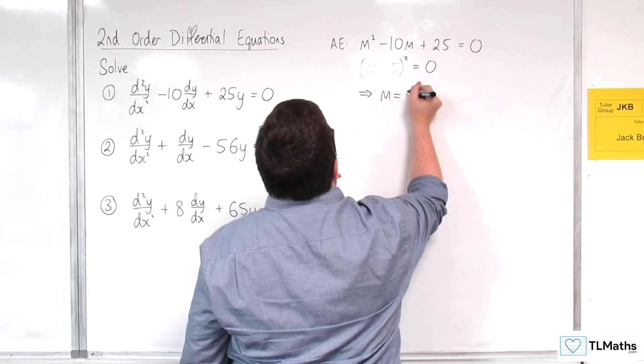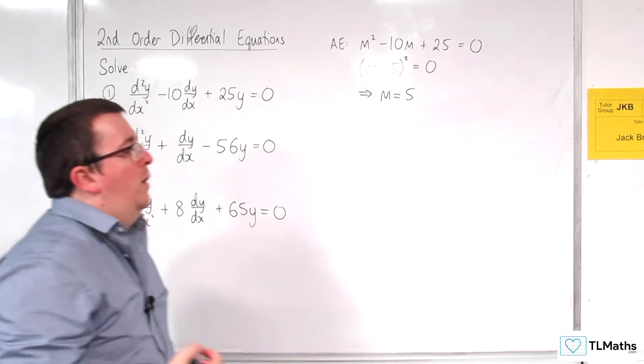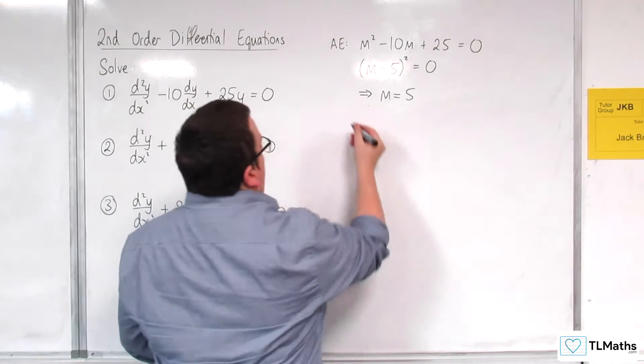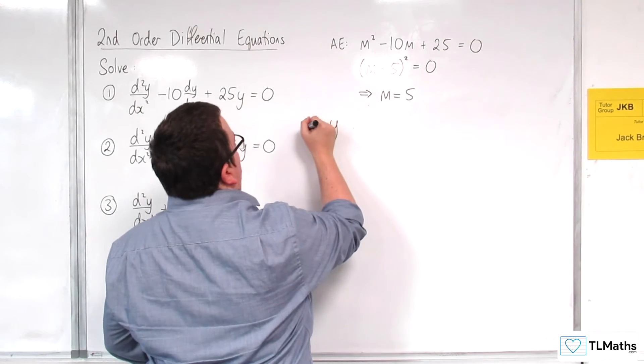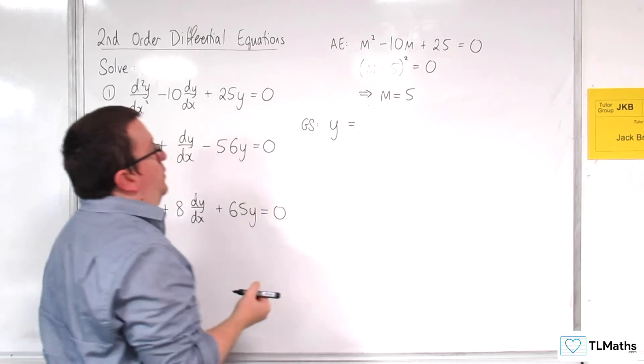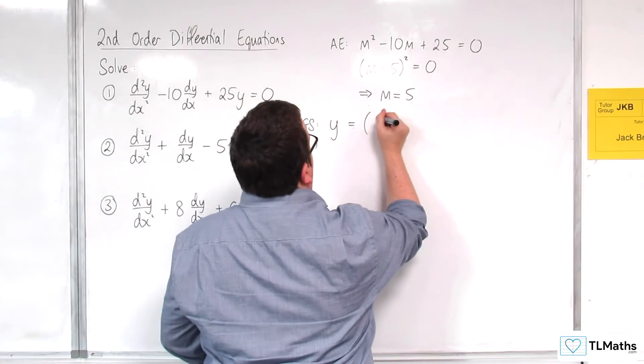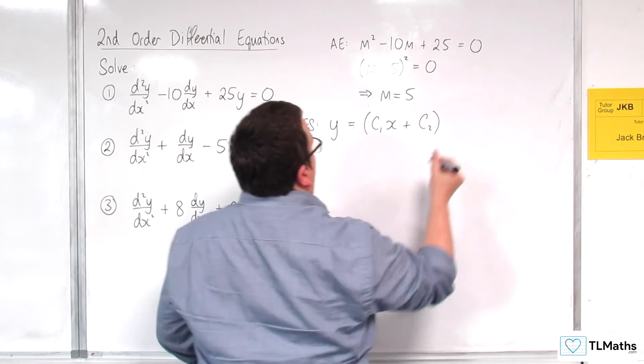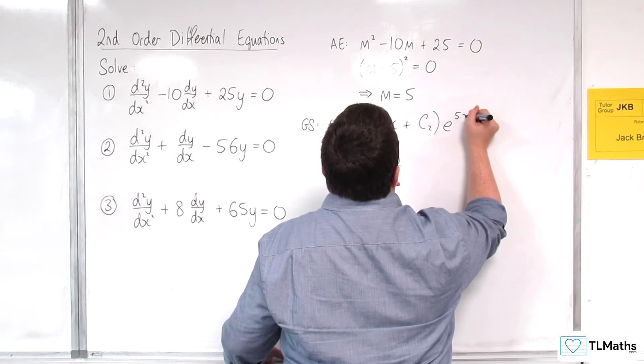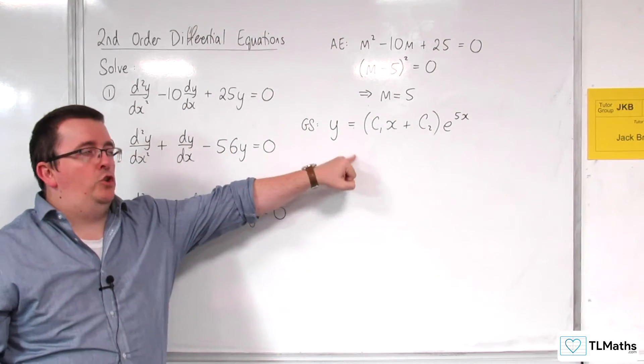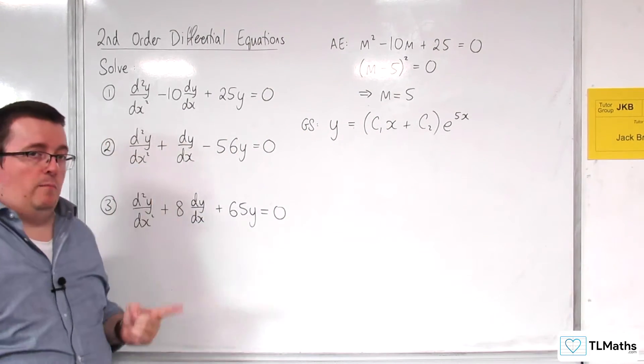And so that implies that m is equal to 5. So we've got one repeated real root. So that means the general solution would be y = c₁xe^(5x) + c₂e^(5x). And so that would be the general solution for number one.